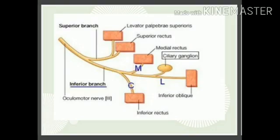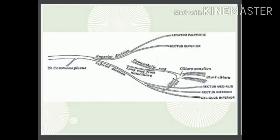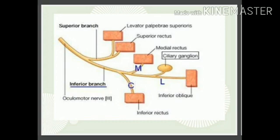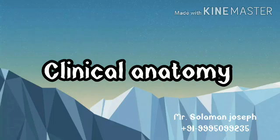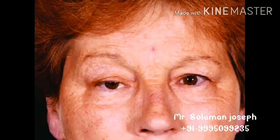In the intraorbital part, the smaller superior division ascends on the lateral side of the optic nerve and supplies the superior rectus and the levator palpebrae superioris muscle. The longer inferior division divides into three branches: first, a nerve to the medial rectus passing inferior to the optic nerve; second, a nerve to the inferior rectus passing downwards to enter the muscle on its upper aspect; third, a nerve to the inferior oblique passing between the inferior rectus and lateral rectus, supplying the inferior oblique from its posterior border. It also gives off the motor root to the ciliary ganglion.